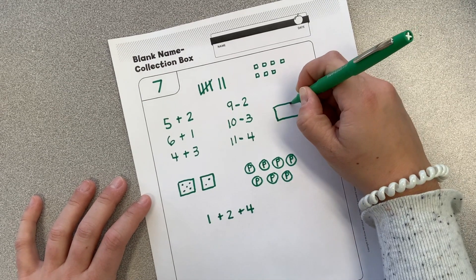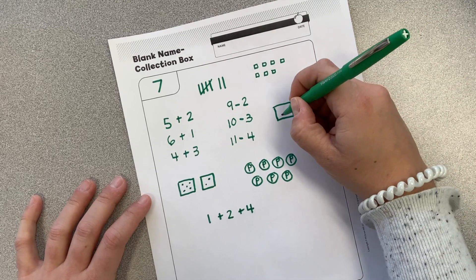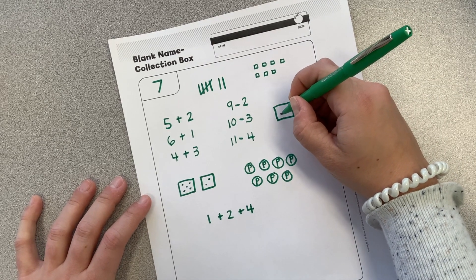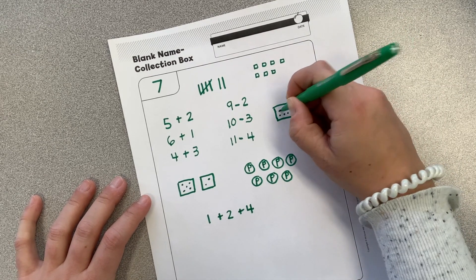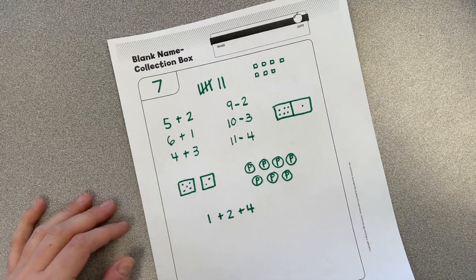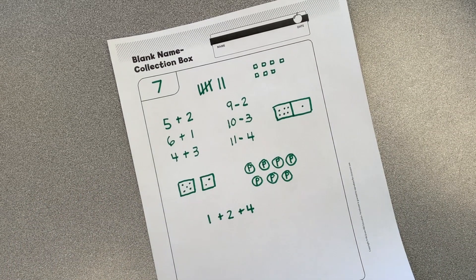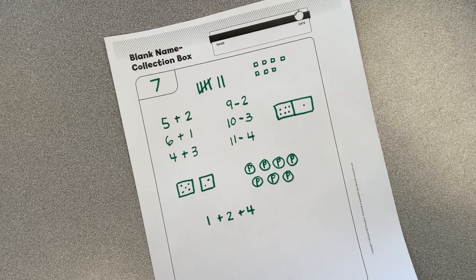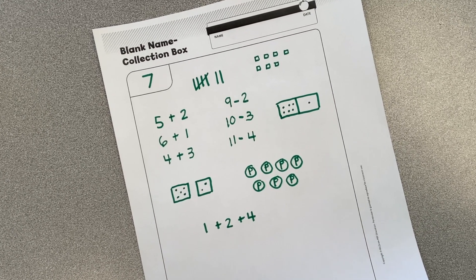And think of it like a part, part total. Maybe there's six on this side and one on that side. How else could I represent seven? So many equivalent names.